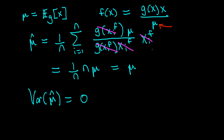We can see that the choice of importance distribution actually matters a great deal. If we want to learn about a distribution g and use a poor approximation — remembering that the ideal importance sampling distribution has a shape of g times x when estimating the expected value of x — we'll get an estimator with very high variance that won't be practically useful. In importance sampling, the choice of importance distribution matters a lot.